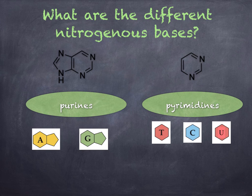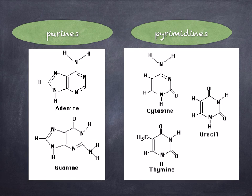Uracil you only find in RNA, and thymine you only find in DNA. Here you can see the chemical structures of the nitrogenous bases. Notice how adenine and guanine are made up of two ring structures, while cytosine, thymine, and uracil are only one ring structure. Also have a look at how similar uracil and thymine are. Uracil is found in RNA, and thymine in DNA.